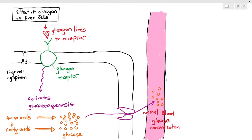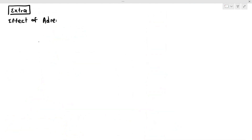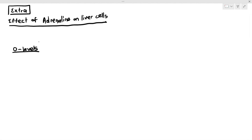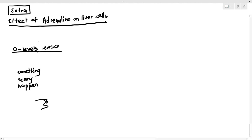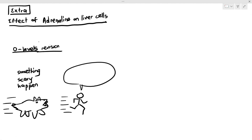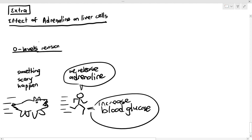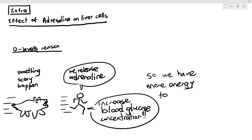Sometimes the question may also ask about adrenaline. Adrenaline is a hormone — when something scary or anxiety-inducing happens, like being chased by some sort of monster, we release adrenaline because it's the fight or flight hormone. One of the functions of adrenaline is to help increase our blood glucose concentration, so we have more energy to run away from the scary situation.